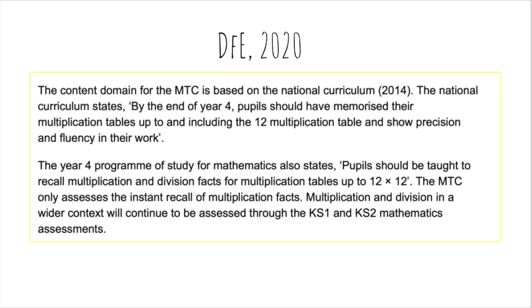The Department for Education states that by the end of Year 4, pupils should have memorised their multiplication tables up to and including the 12 multiplication table and show precision and fluency in their work. So it is absolutely vital that we provide the support the pupils need to make sure that they are able to do this.